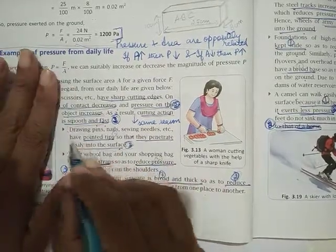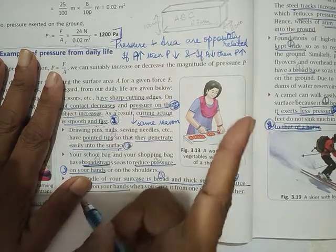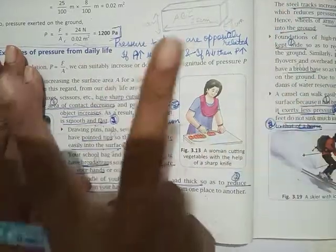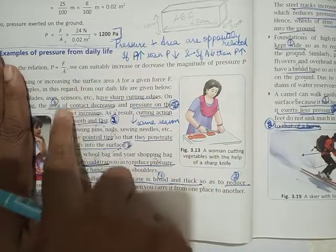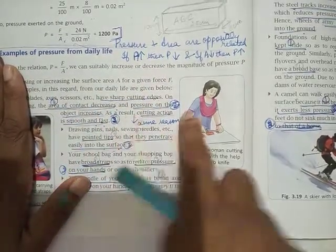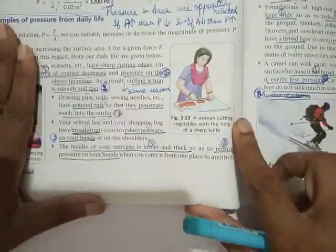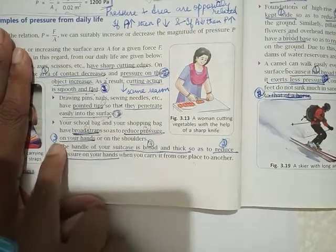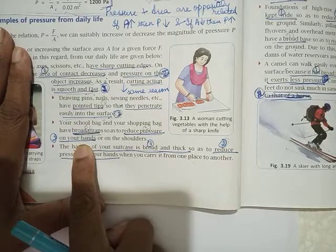Now if you write only this, I will not give you full mark. I am telling you now itself. Please learn to write the reason. So broad straps means area increases, so pressure decreases. Therefore, it reduces pressure on our hands. It does not pain much when you put it on your shoulders. Is it clear? I think you got it.